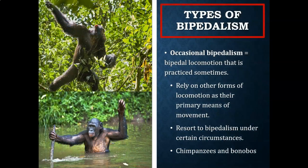Let's look at the three different types of bipedalism. The three different types are occasional bipedalism, habitual bipedalism, and obligate bipedalism. Occasional bipedalism is bipedal locomotion that is practiced sometimes. Occasional bipeds are going to rely on other forms of locomotion as their primary means or modes of movement, and they resort to bipedalism under certain circumstances.